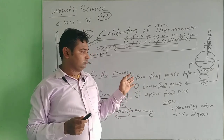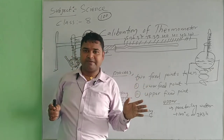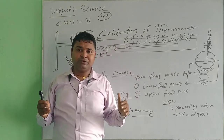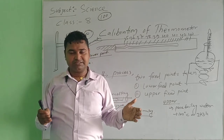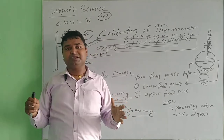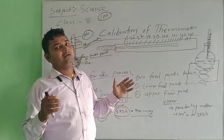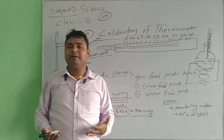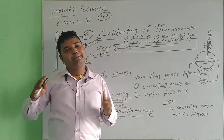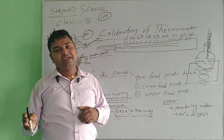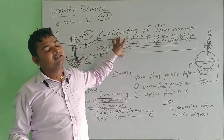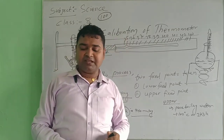You can also, by the help of this experiment, calibrate different thermometers if there is no scaling on them. How the calibration of thermometers is done: by determining the lower fixed point and the upper fixed point, and dividing the space between them into equal parts. In this way, we can calibrate the thermometers.